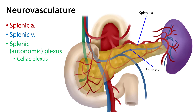The spleen is served by the most impressive and tortuous branch of the celiac trunk, the splenic artery. There are splenic branches from that splenic artery that enter the hilum of the spleen.